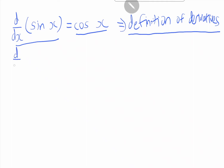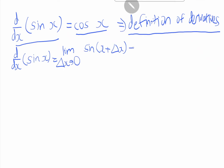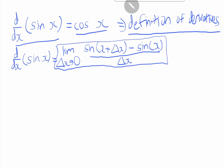Let's start off: d over dx of sin x, based on the formula for the definition of derivatives, can be written as the limit when delta x — which is like an extension of x — goes to 0, for sin(x plus delta x) minus sin x, over delta x. This is the definition of derivative for sin x when we differentiate it.